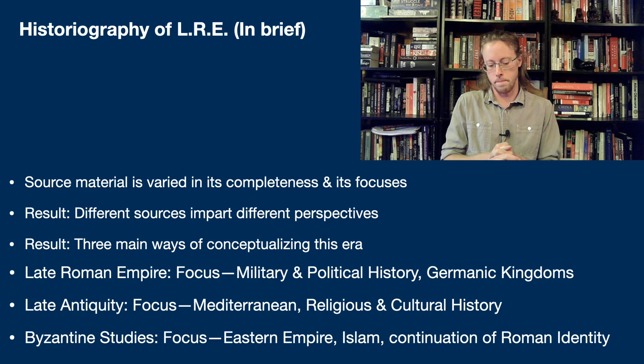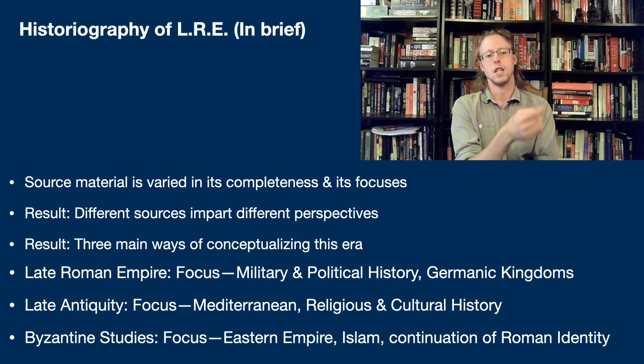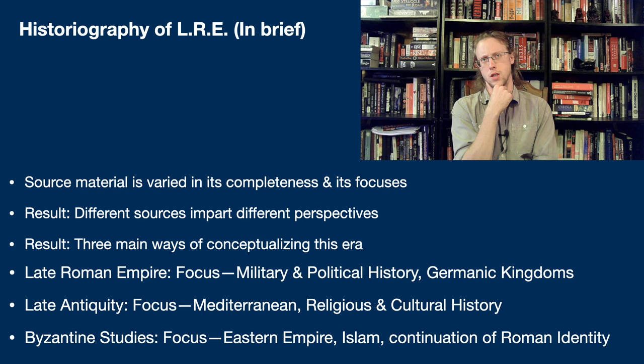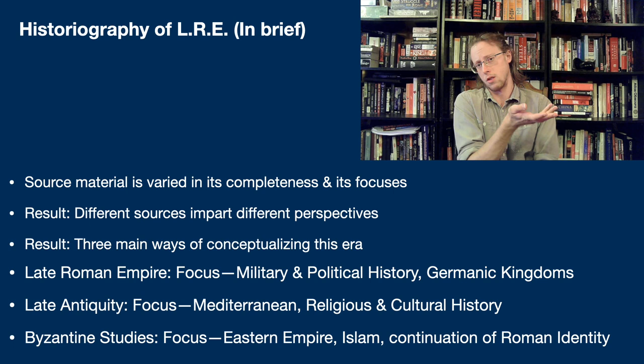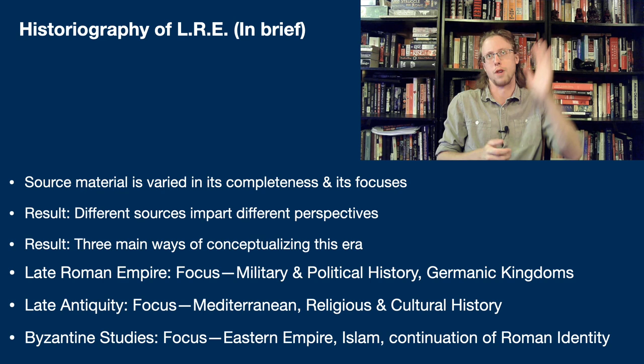Those sources that do survive may not necessarily be narrative histories. They may be things that lend themselves more towards the investigation of specific aspects of a different time period. For the Roman Empire, we do actually have a lot of material surviving. In terms of textual sources, probably nothing more is going to be discovered at this point, mainly because the textual sources are written on organic materials that just break down. But since about the late 1970s, the archaeology for this period has just taken off, so we're getting more and more material evidence.